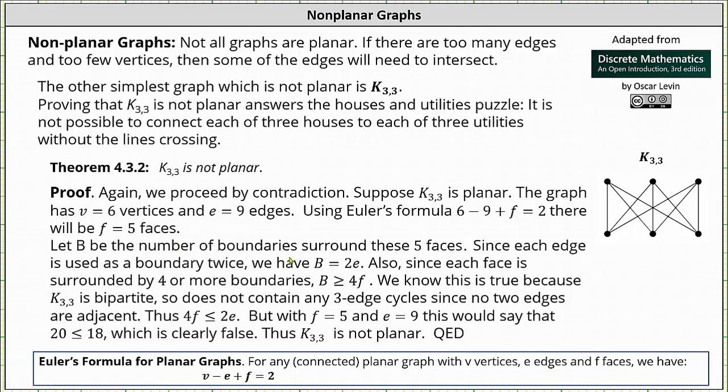Let b be the number of boundaries surrounding these five faces. Since each edge is used as a boundary twice, we know that b, the number of boundaries, is equal to two times e, the number of edges. Also, since each face is surrounded by four or more boundaries, we have b is greater than or equal to four times f, the number of faces.